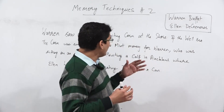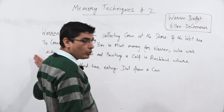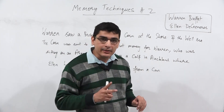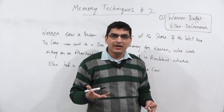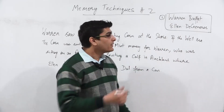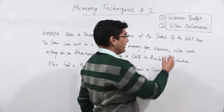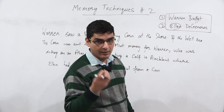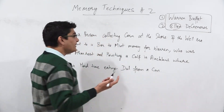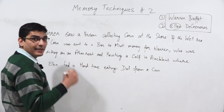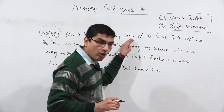Before we come to the details of the techniques, we have to go through this story. The story has two main characters. The first is Mr. Warren Buffett, whom you must already be aware of. The second person is Miss Ellen DeGeneres — also a very famous personality you must have seen on YouTube. Warren Buffett of course you must know.